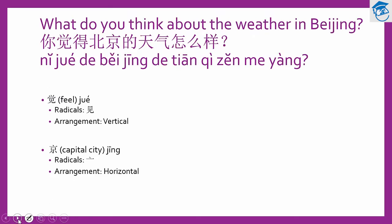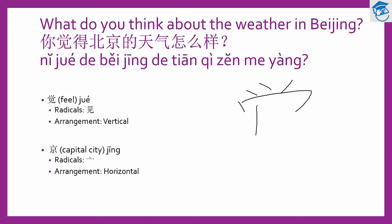Next, David begins the conversation by asking: What do you think about the weather in Beijing? — 你觉得北京的天气怎么样？ There are quite a few new words. The first one is 觉, which usually means feel. This is the pinyin 觉, and the radical is on the bottom. The arrangement is vertical, with top and bottom components. Let's look at how to write 觉: nine strokes for this word.